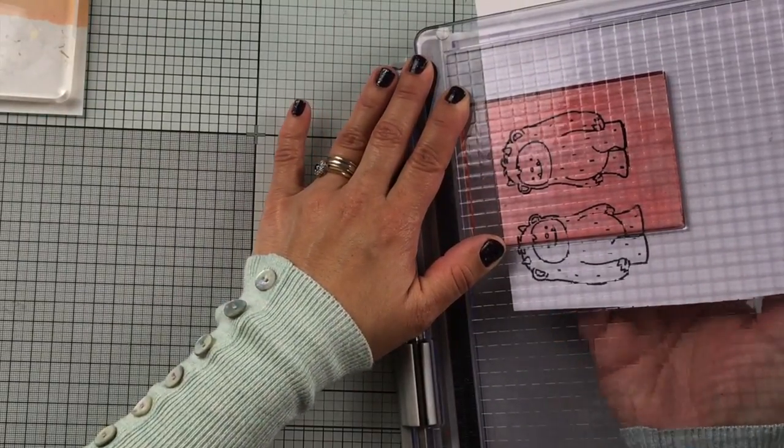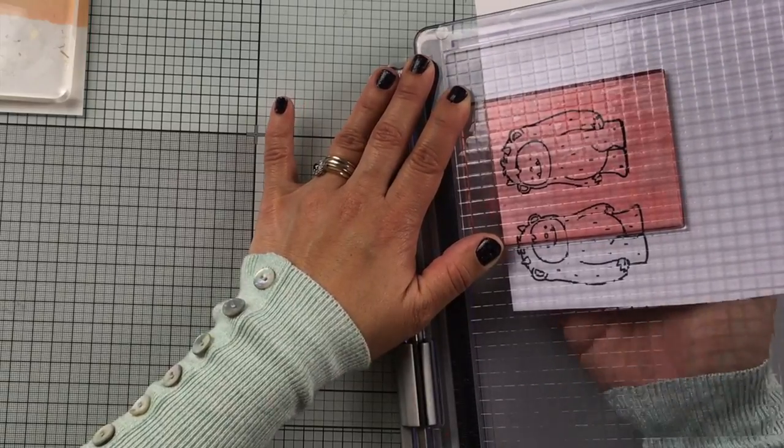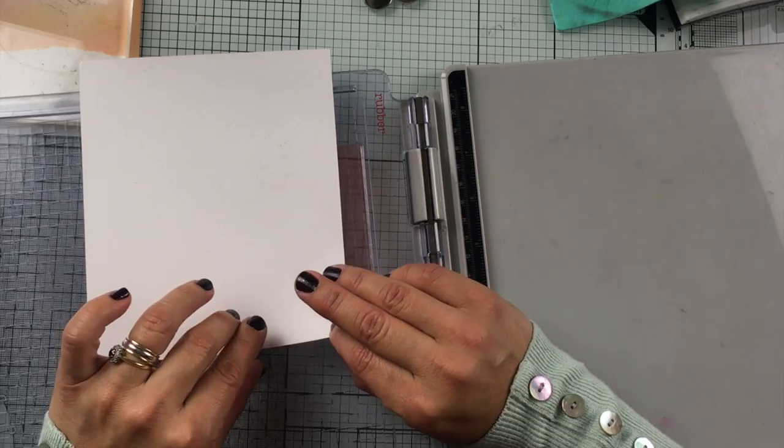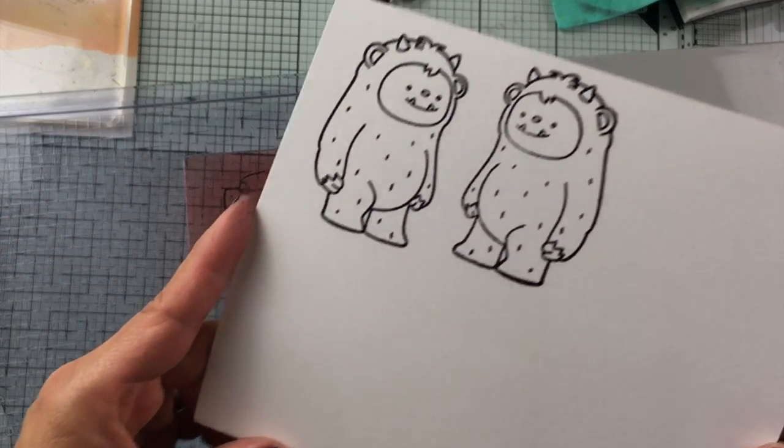Remember that to get crisp image on Bristol paper you need to stamp twice, and you have here one chance. So this is the result and I think it's quite good for being a mirror image.